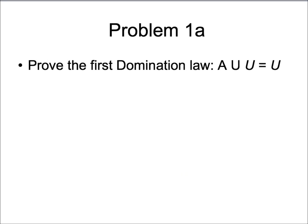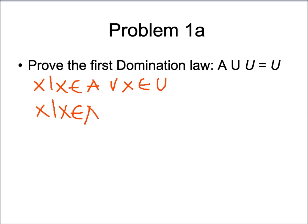Now that we've learned about all the different set identities, let's start working on a problem. Proof of the first domination law states that the union of set A and the universal set is equivalent to the universal set. We can represent this by saying there is an X such that X is an element of A or X is an element of the universal set. Since X is always an element of the universal set, we simplify to X is an element of A or true, which is always true, giving us the universal set.